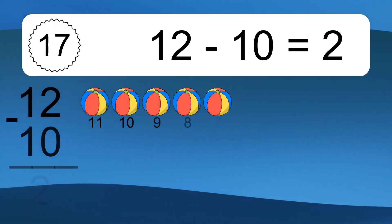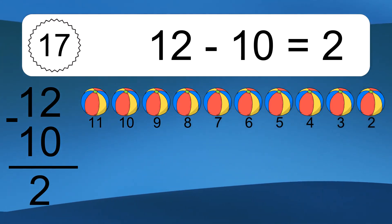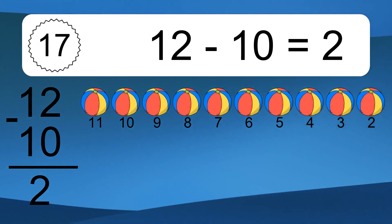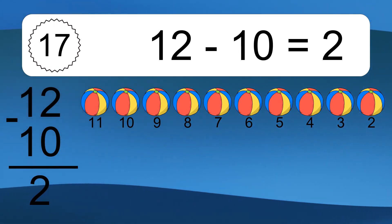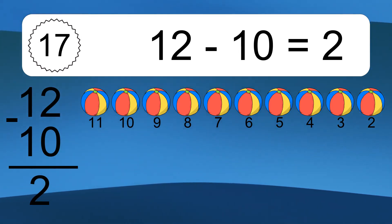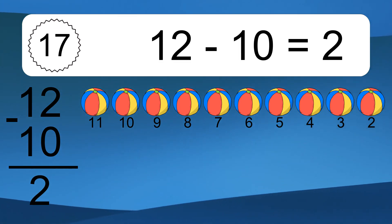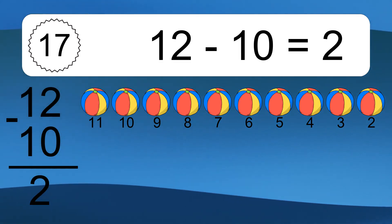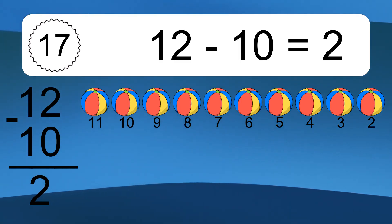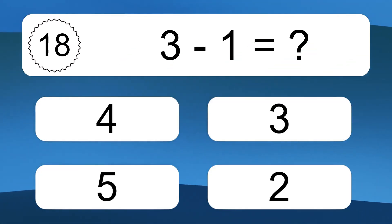12 minus 10 equals what? 12 minus 10 equals 2. Let's count it. 11, 10, 9, 8, 7, 6, 5, 4, 3, 2.